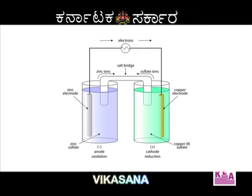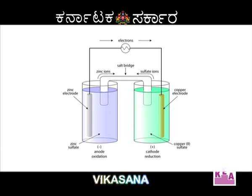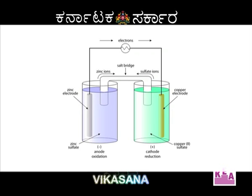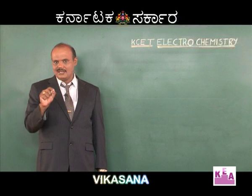The Daniel cell is made up of two electrodes. One is the copper electrode, another is the zinc electrode. Copper electrode means a copper rod dipped in copper sulfate solution. Zinc electrode means a zinc rod dipped in zinc sulfate solution. These two electrodes are connected by a special device called the salt bridge. The salt bridge connects the two electrodes, eliminates the liquid-liquid junction potential, and maintains electrical neutrality.